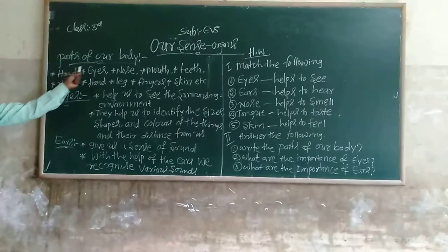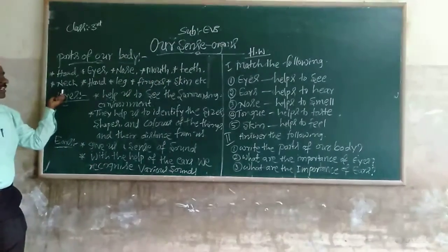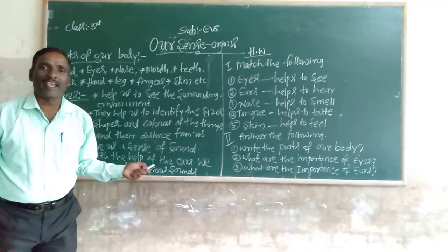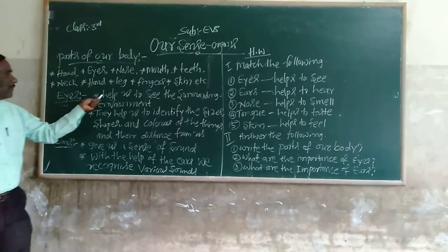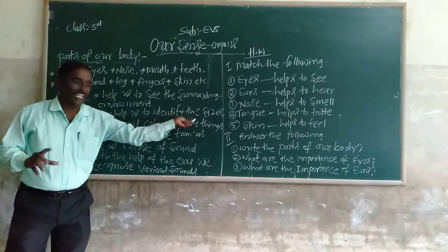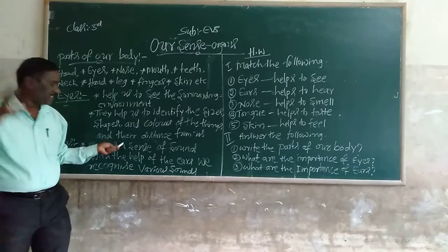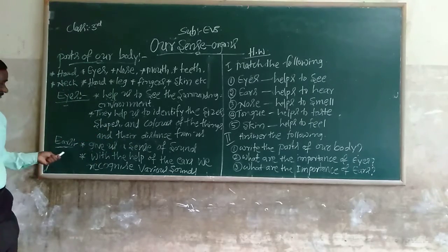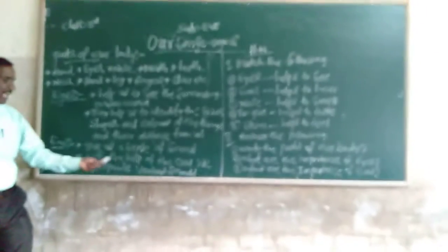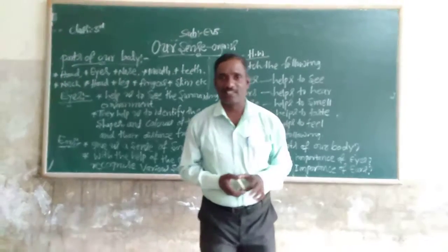Next question: what are the importance of eyes? Eyes help us to see our surroundings and environment, and help us to identify the sizes and colors of things and their distance from us. What is the importance of the ear? The ear gives us a sense of sound. With the help of ears, we recognize sounds. Are you understanding? We shall stop here. Thank you.